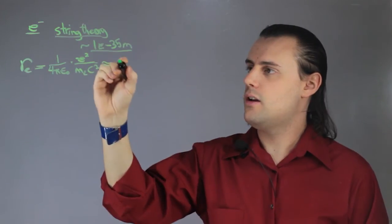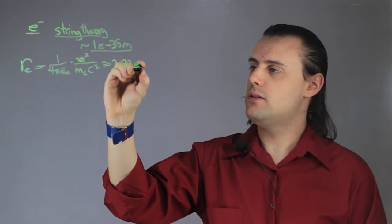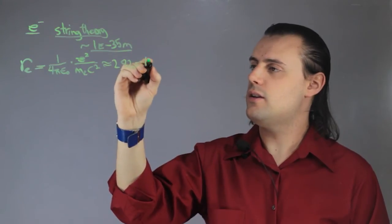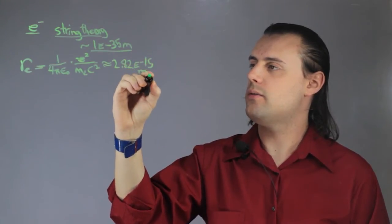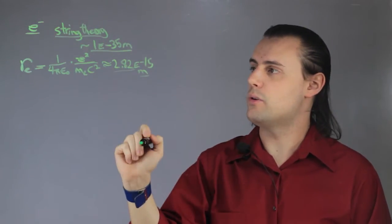divided by the mass of the electron times the speed of light squared. So the classical radius, or size of the electron in this case, would be approximately 2.82 times 10 to the negative 15 meters, considerably larger than something that string theory would predict.